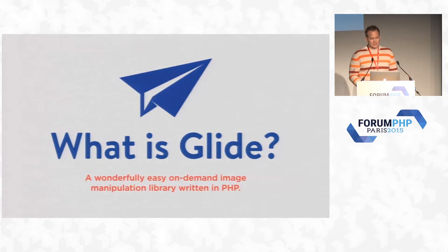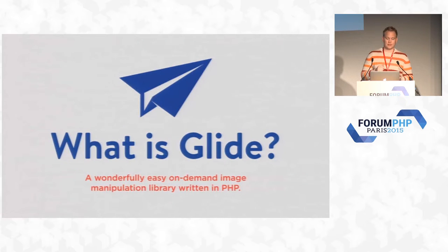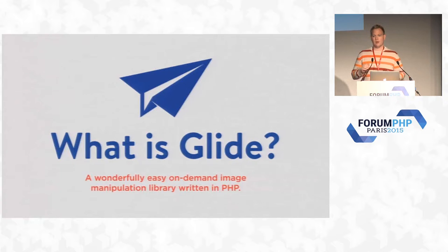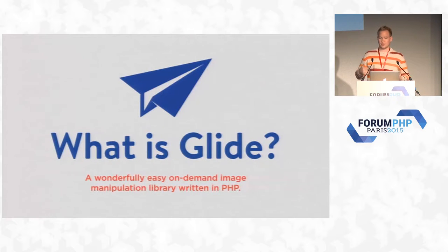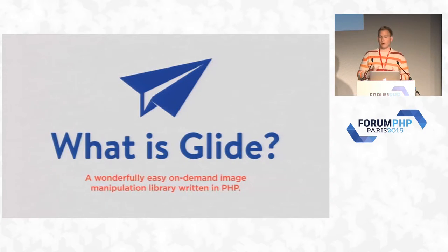So what exactly is Glide? Glide is an image manipulation library with two goals. One goal is on-demand images — I want to do on-demand image processing, not something you do beforehand, but the second you request an image it generates it for you. The other big goal was a ridiculously easy API, and I wanted that API to be HTTP-based.